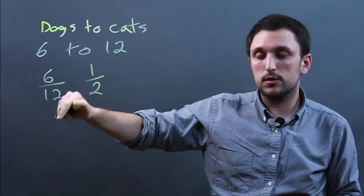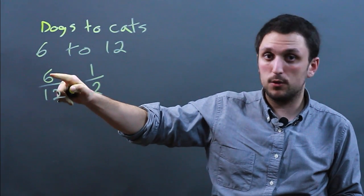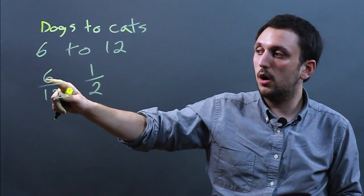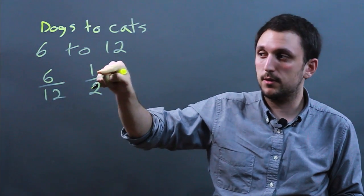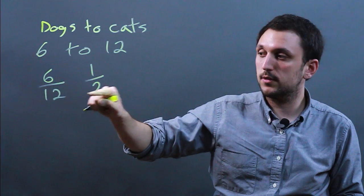The only way you can simplify a proportion is if both numbers, numerator and denominator, are reducible or divisible by the same number, in this case 6. 6 divided by 6 is 1, 12 divided by 6 is 2.